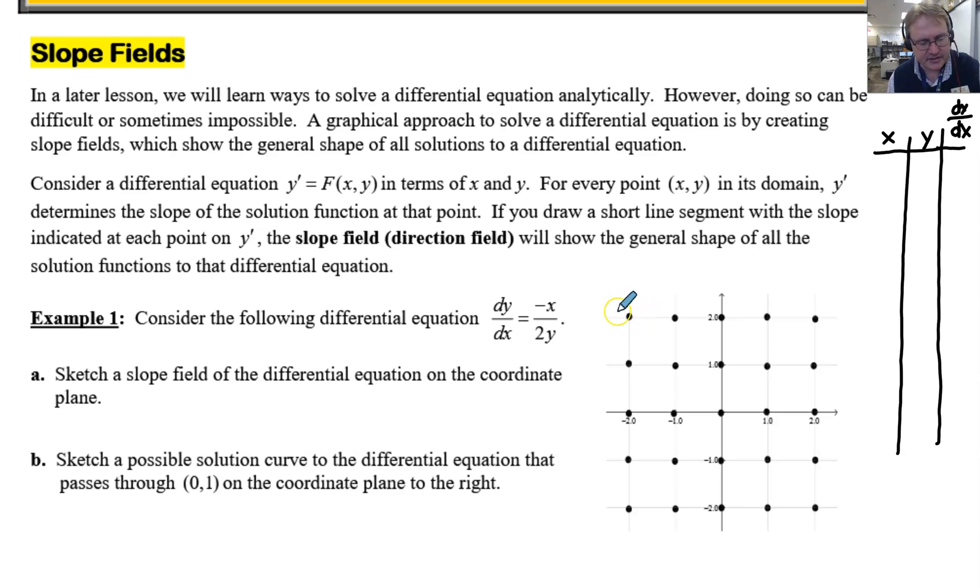I like to start in the upper left corner, that's the point negative 2 comma 2. So merely just plug the negative 2 in for x, negative negative 2 is 2, divide that by 2 times 2 which is 4, so 2 over 4 would equal a half. So far so good, right? Well then what do you do to that half?